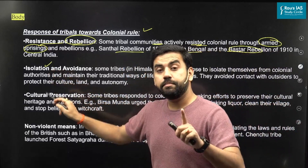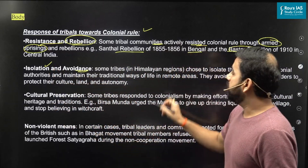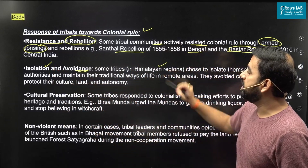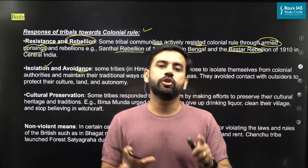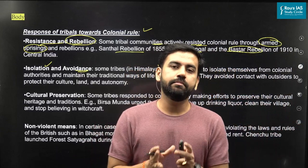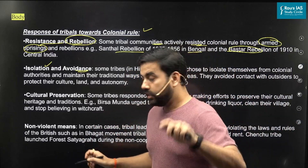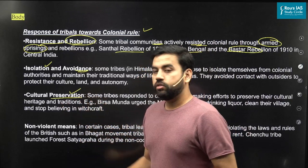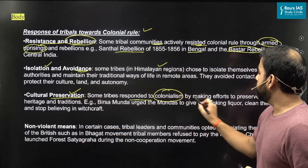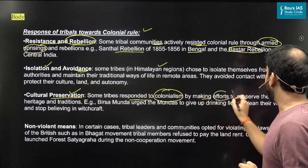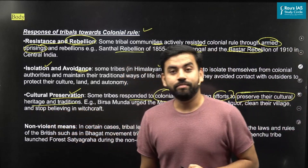The second response is the policy of isolation and avoidance. Many tribals, especially in the Himalayan region, tried to keep themselves away from British work culture and remained isolated from British interference. Third: cultural preservation. Some tribes responded to colonialism by making efforts to preserve their own cultural heritage and traditions. This is a unique and important form of resistance.